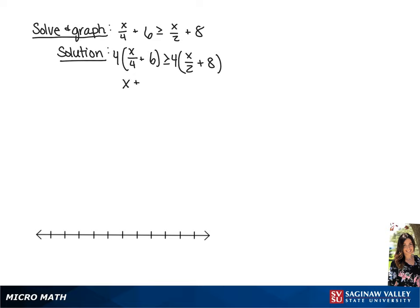This is going to give us x plus 24 is greater than or equal to 2x plus 32. We're going to subtract each side by 24, giving us x is greater than or equal to 2x plus 8.